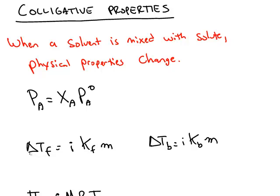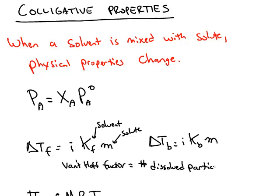You have the formula delta Tf, stands for the change in the freezing point, is equal to i, which is called the Van't Hoff factor, times Kf. Kf is a constant for freezing for the solvent, not the solute, times little m, the molality, which is the molality of the solute. The Van't Hoff factor is the number of dissolved particles from one solute particle.